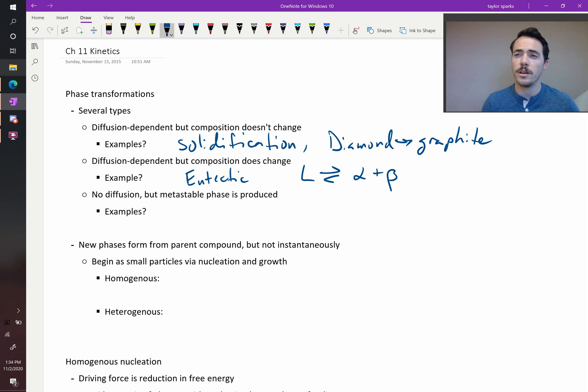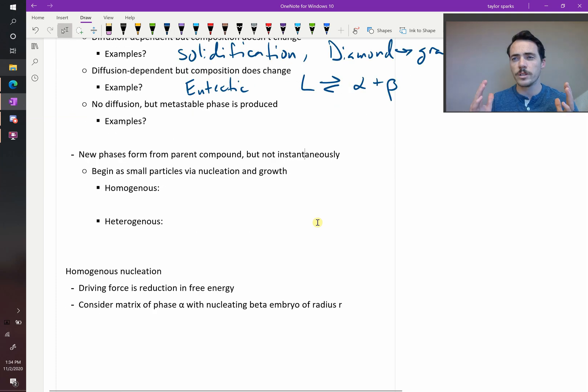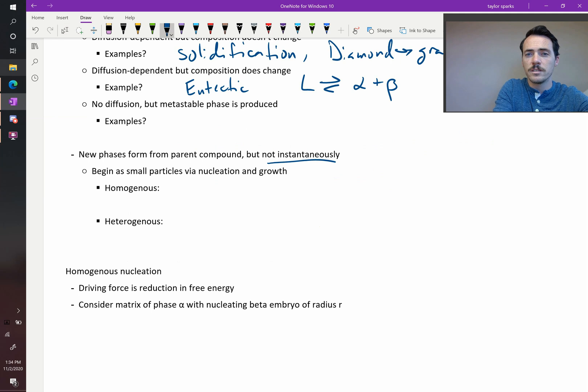Now the third type says that there's no diffusion present but it forms a metastable phase. We're going to give you an example of this later on in this chapter when we talk about steel. Now regardless of which type of phase transformation we're talking about, they all include these components. You start out with a parent phase and you're going to switch it to your new phase, and it doesn't happen instantaneously. Instead it starts out with a little nucleus. It starts out as a small particle. This nucleus can then either shrink and disappear or it can grow. So nucleation and growth.